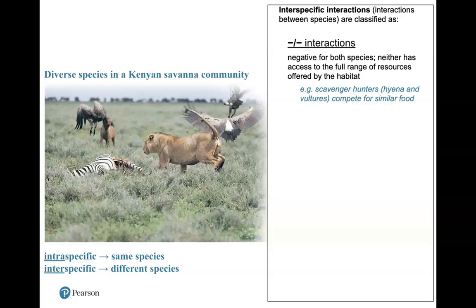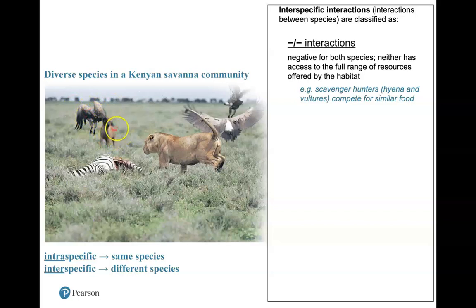For instance, maybe they don't have access to the full range of resources offered by the habitat. In this example, I'm showing you scavenger hunters. The hyenas are an example of a scavenger hunter, and the vultures are an example of a scavenger hunter. They're going to compete for the same food source — the zebra carcass after the lion's done with it. Since they compete with each other, neither one benefits. It's negative for the vulture to compete with the hyena, and negative for the hyena to compete with the vulture. Maybe there's a clear winner, but it's still a negative relationship because they have to expend energy to compete. That is a negative-negative interaction.